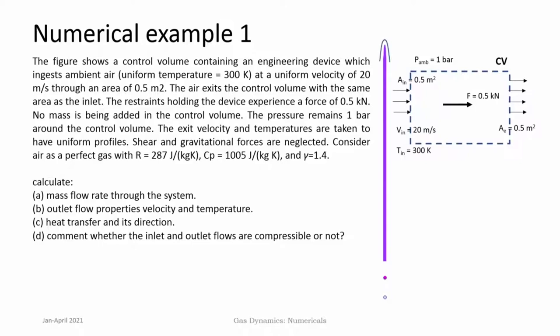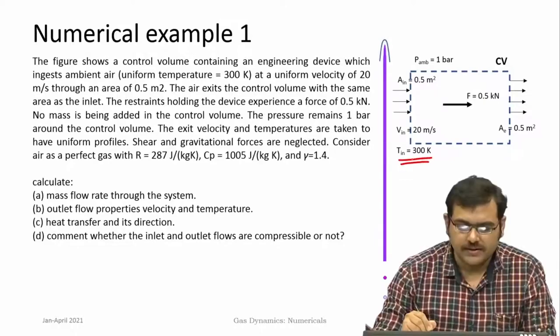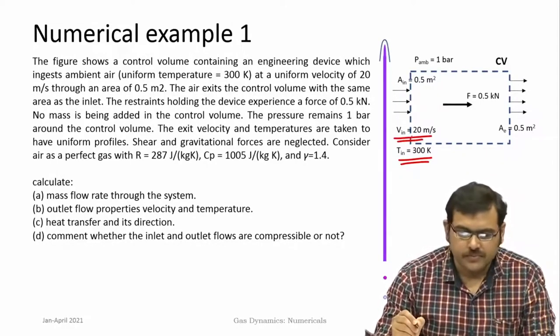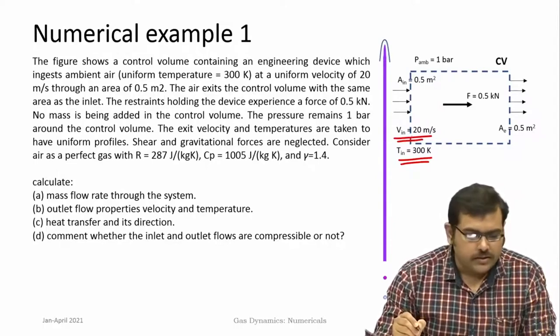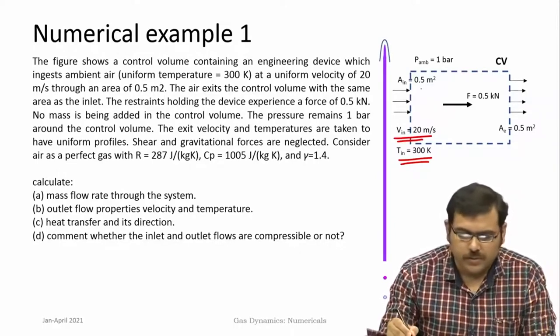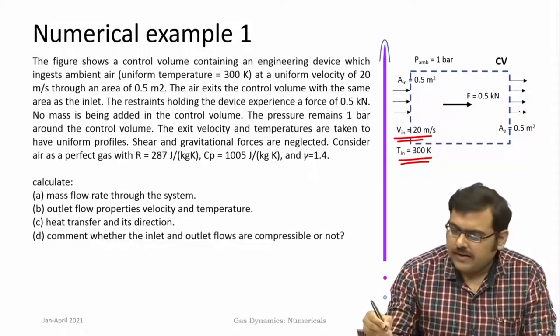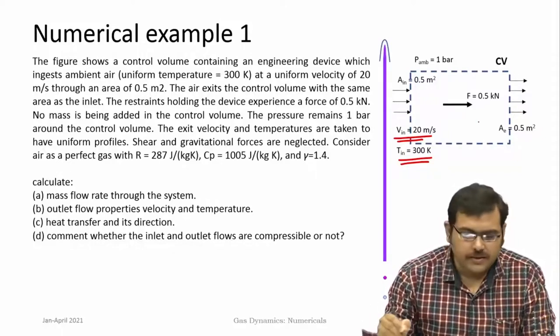The figure shows a control volume containing an engineering device which ingests ambient air at uniform temperature of 300 Kelvin at a uniform velocity of 20 m/s through an area of 0.5 m². The air exits the control volume and the area of exit is the same as the area of inlet.